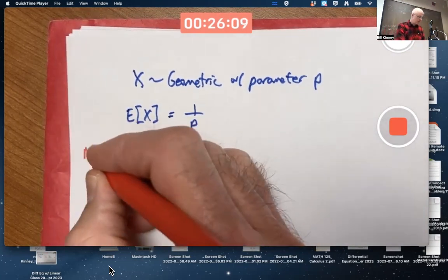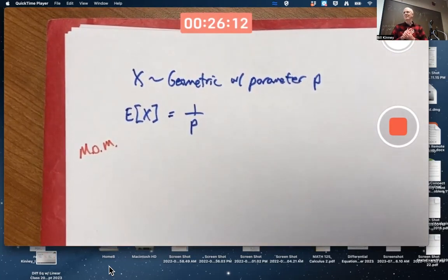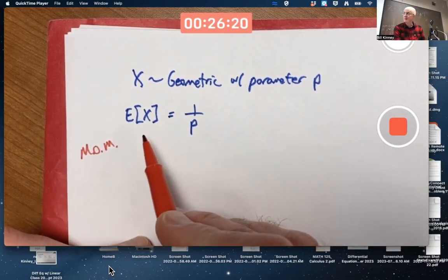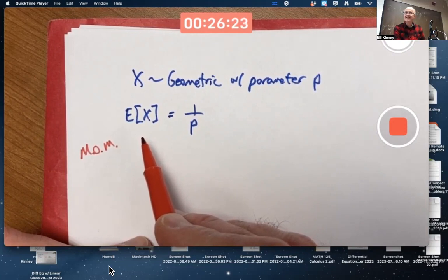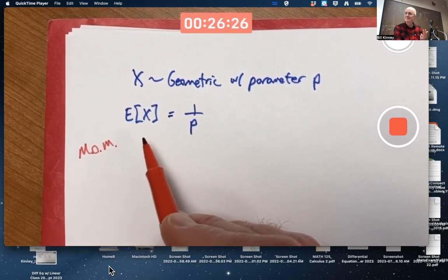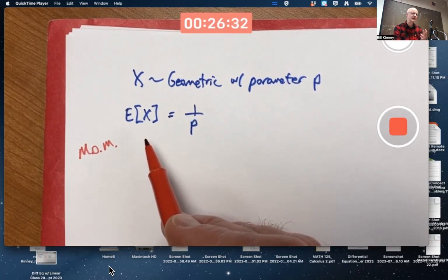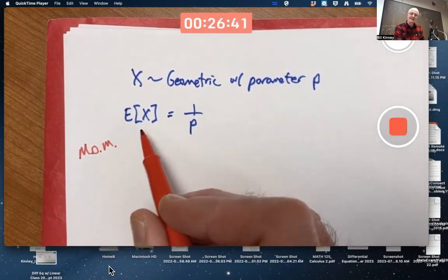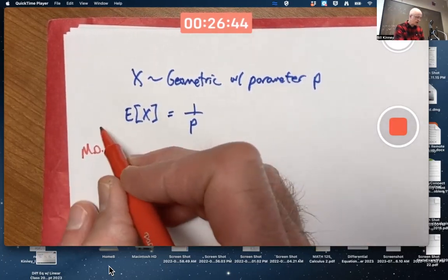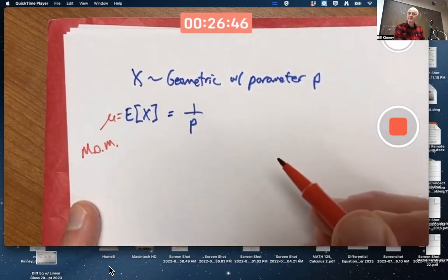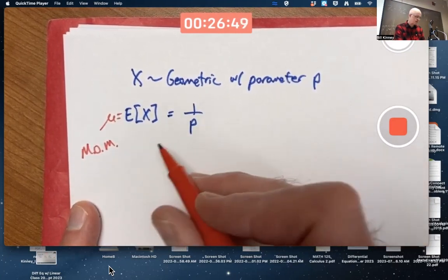With the method of moments, or again, MOM for short. Warms your heart, right? This is the MOM method. What do we do? We replace, why is it called the method of moments? We replace the first moment with a natural estimator for it. If we have a second moment in the equation we're thinking about, we would replace it with a natural estimator for the second moment. Method of moments, replace this. This is really a parameter. It's the mean. Replace that moment, that first moment, with a natural estimator.